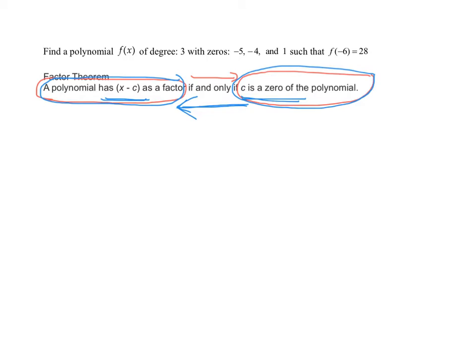In completing these problems, I like to draw out a little table that helps me keep my thoughts organized. I'm going to have my zeros, then the associated factor that goes with that zero, and I need to talk about the multiplicity of that zero.